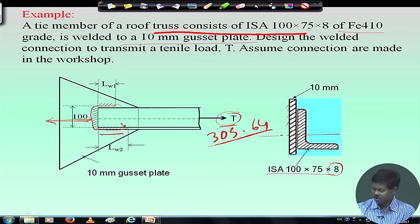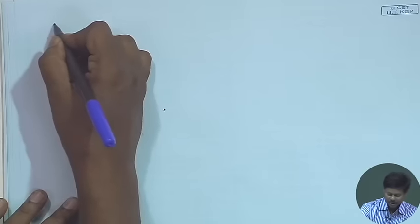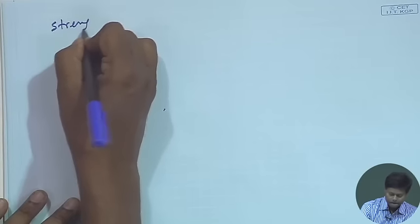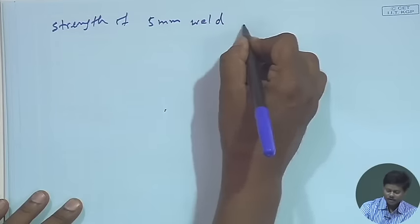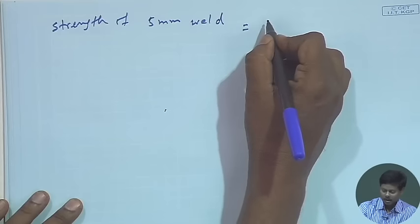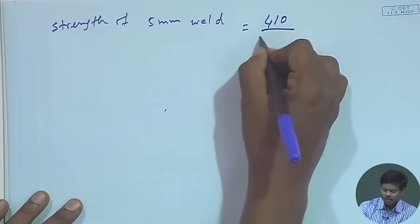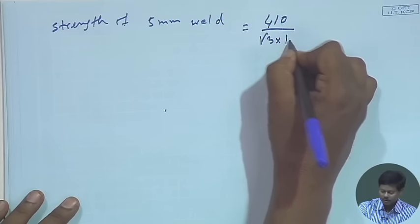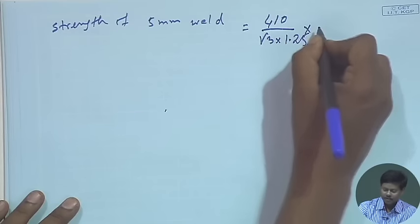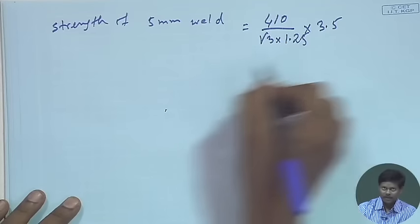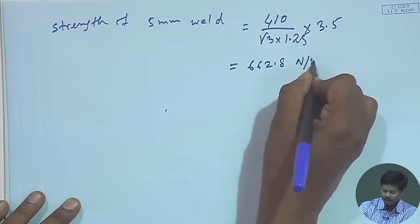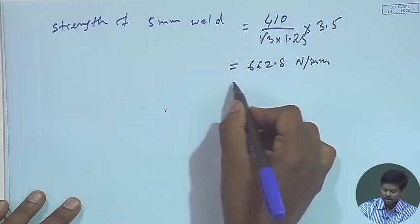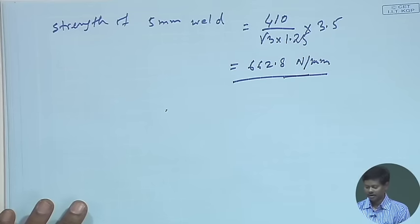We find the strength of the 5 mm weld per unit length as f_u / (√3 × γ_mw) × t_e, which gives 662.8 N/mm. So the strength of the weld per millimeter run is 662.8 N/mm.